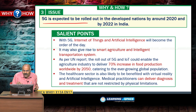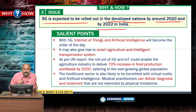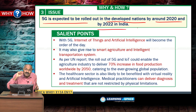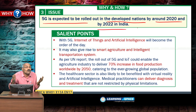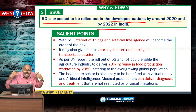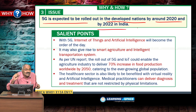5G is expected to be rolled out in developed nations by around 2020 and in India by 2022. Once this fifth generation technology comes to our country, it is going to bring revolutionary changes: Internet of Things — where you can control your home environment from your office — artificial intelligence, smart agriculture, and intelligent transportation systems will all become reality.